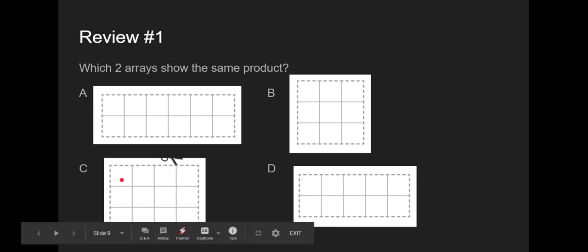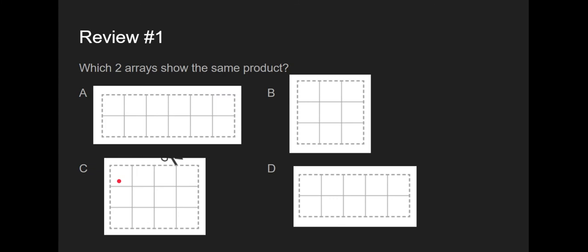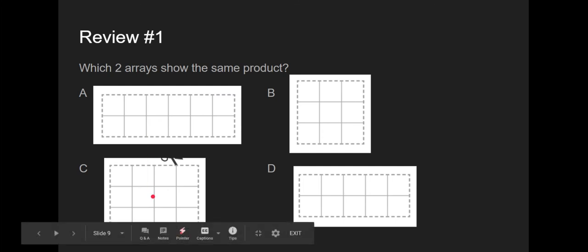Let's go to C. We have 1, 2, 3 rows and 1, 2, 3, 4 squares in each row. So in C, our multiplication problem would be 3 rows of 4. 3 times 4 equals 12. Hey, wait a minute. A was 2 rows of 6. 2 times 6 equals 12. And C was 3 times 4 equals 12. So the answers to this problem would be that A and C have the same product. They are both showing an answer of 12 square units.